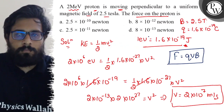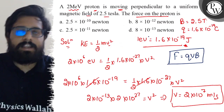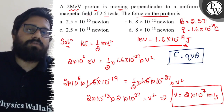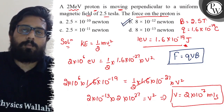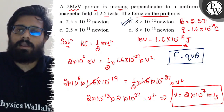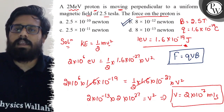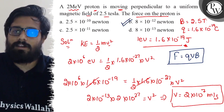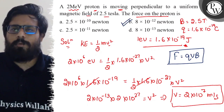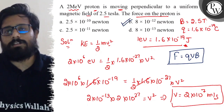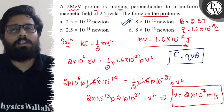So your final answer is 8 into 10 to the power minus 12 newton, which is option B, and hence option B is absolutely correct. I hope you got the concept of this question.